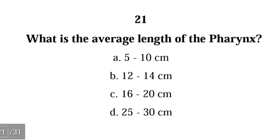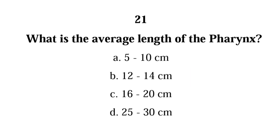Number 21. What is the average length of the pharynx? A. 5 to 10 cm, B. 12 to 14 cm, C. 16 to 20 cm, D. 25 to 30 cm. The correct answer is B. The average length of the pharynx is 12 to 14 cm.